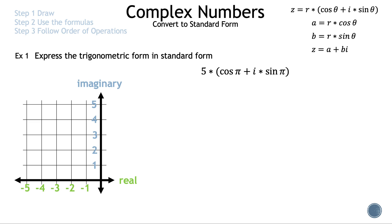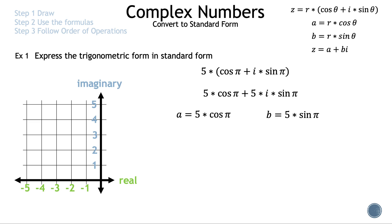We have all the formulas we might need on the top right. Let's convert this complex number in trigonometric form to standard form. First, we distribute that 5 to both terms, giving us 5·cos π + 5i·sin π. The next step is to find a and b so we can write our complex number in standard form. So a = 5·cos π and b = 5·sin π. So r = 5 and θ = π.